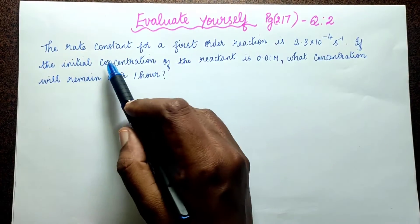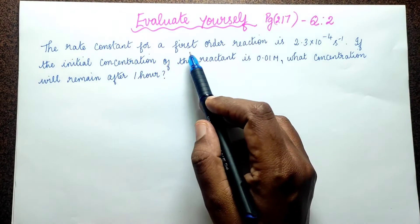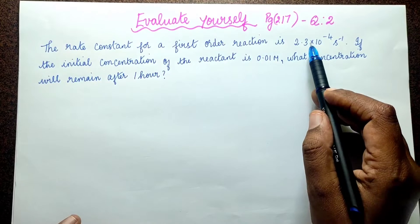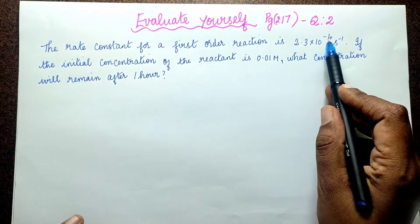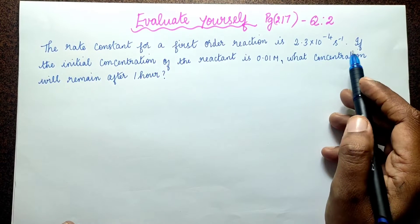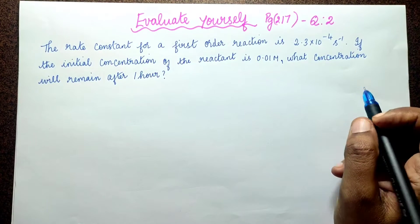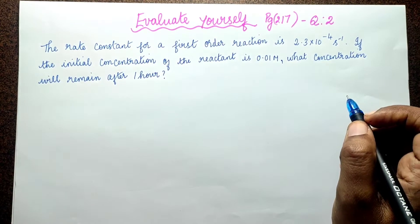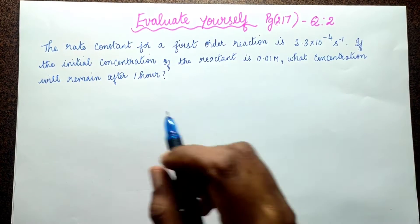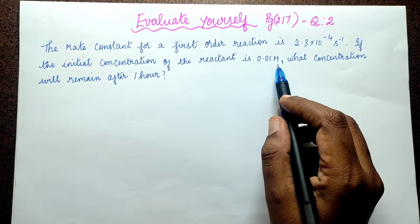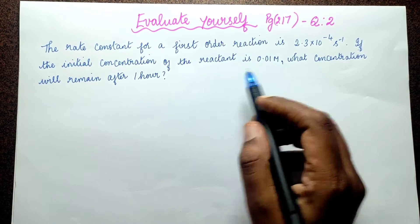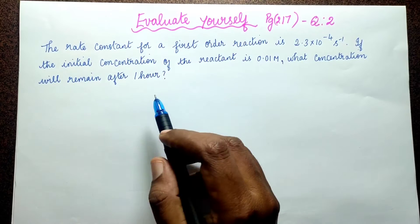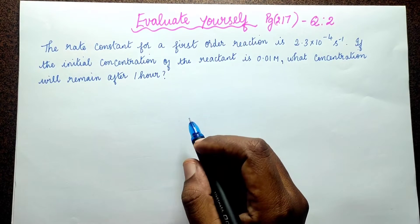Question: The rate constant for a first order reaction is 2.3 × 10⁻⁴ per second. If the initial concentration of the reactant is 0.01 M, what concentration will remain after 1 hour?